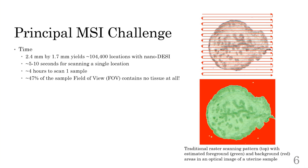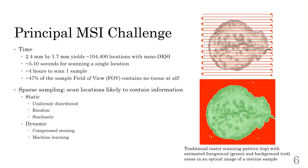This leads to the idea of integrating sparse sampling into nano DESI, where only locations that probably contain information that the experimentalist is actually interested in should actually be scanned. Sparse sampling can either be used with a statically defined pattern, with more advanced variations usually being produced with stochastic models for very specific scenarios, or else through dynamic means. Dynamic sparse sampling will actively rely on information obtained during a scan to inform future measurement locations, and these methods are principally based in compressed sensing and or machine learning.